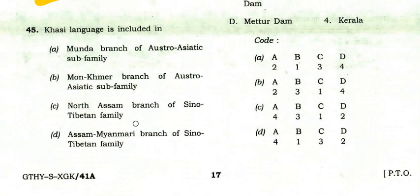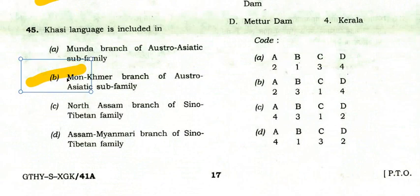Khasi language is included in — the right option is B: the Mon-Khmer branch of the Austro-Asiatic subfamily.